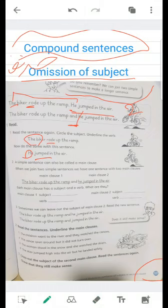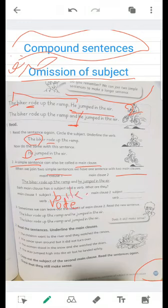A simple sentence can also be called a main clause. A simple sentence can also be called a main clause. When we join two simple sentences, we have one sentence with two main clauses. Main clause one: the biker rode up the ramp. Main clause two: and he jumped in the air. We have two main clauses. Each main clause has a subject and a verb. In main clause number one, the subject is the biker, the verb is rode. In sentence number two, we have he, and we have jumped.